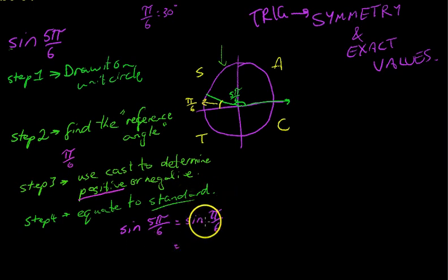My last step really here is to either draw a standard triangle. 6, 1, 2, root 3. And I'll know that sine π/6 will be equal to opposite over hypotenuse root 3 on 2. Oops. My bad. π/6 goes up here. Which means that sine 5π/6 is equal to sine π/6, which is equal to opposite over hypotenuse, which is 1/2.